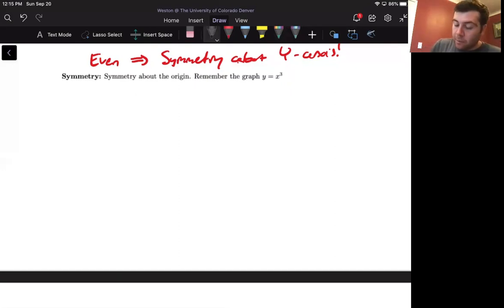Remember we have symmetry about the origin. If we graph y equals x cubed, on the positive side, that looks something like this. On the negative side, we reflect it across this line, or rotate it 180 degrees. The bottom half looks like that.